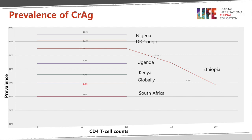We can see from a variety of studies the prevalence of antigen positivity in different parts of the world, primarily in Africa, ranging from 4% up to 13% in Nigeria, in relation to the CD4 T cell count. Patients with a low number of CD4 cells — below 100 — show considerable variation in the prevalence of this antigen.